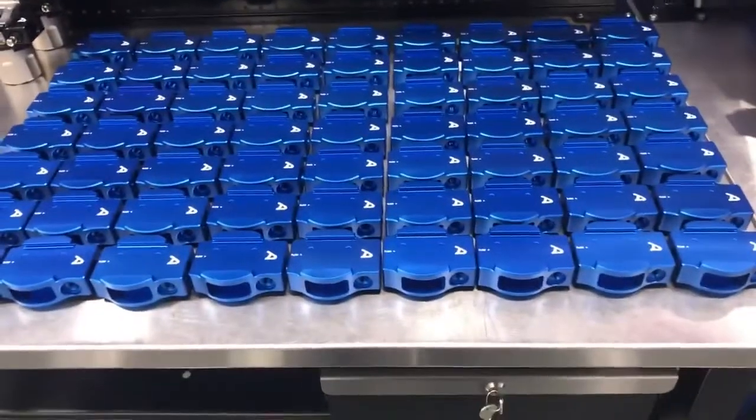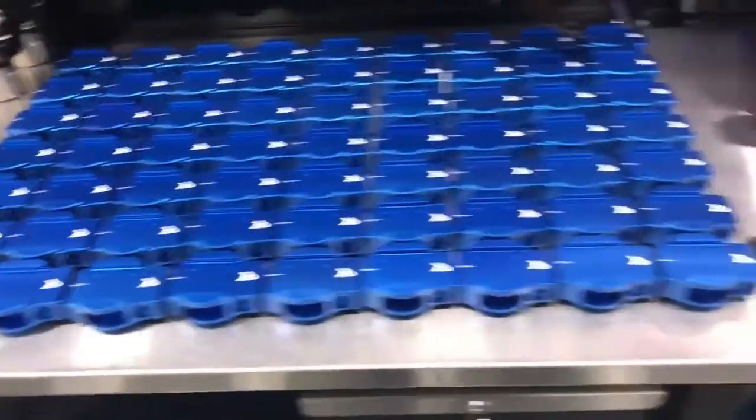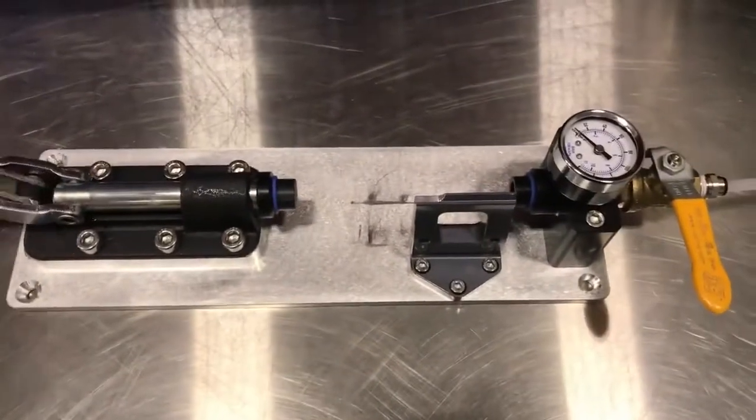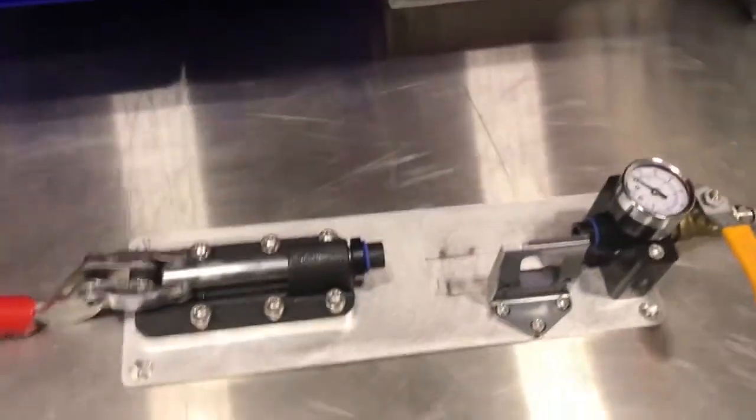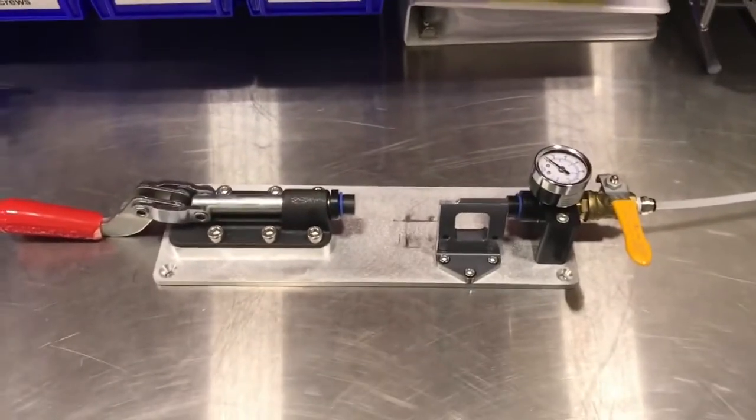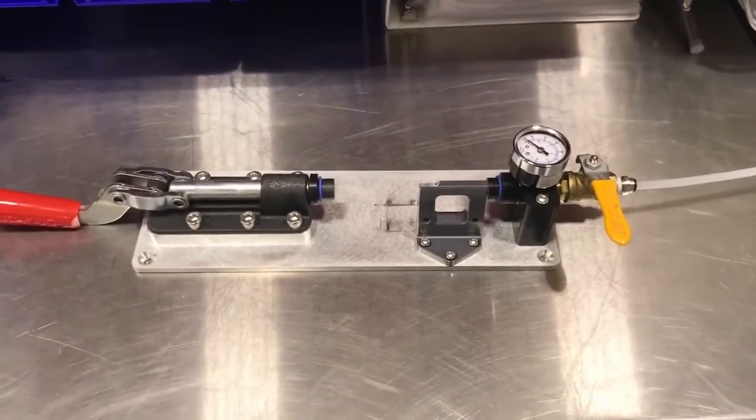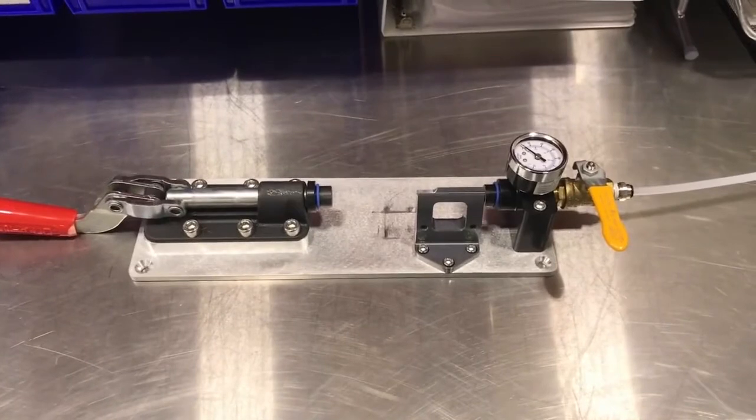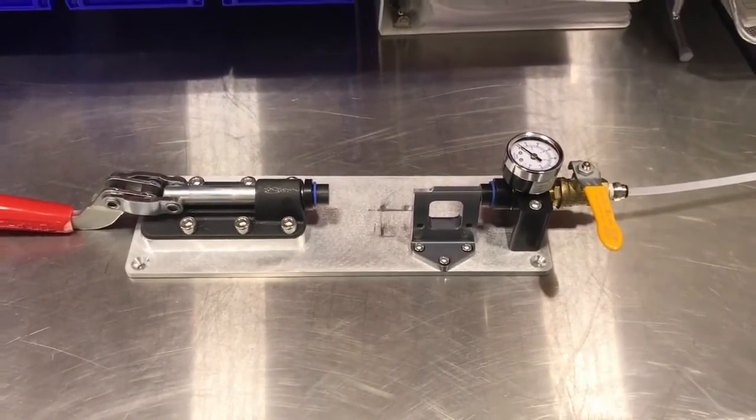So after we get this fully assembled, we bring it over and put it in this handy little tool where it basically just clamps in place, and we pressurize the entire thing with a gas which is 95% nitrogen and 5% helium. And then we have a gas sensor so if there's any helium that leaks past the O-rings, it sets off the sensor.